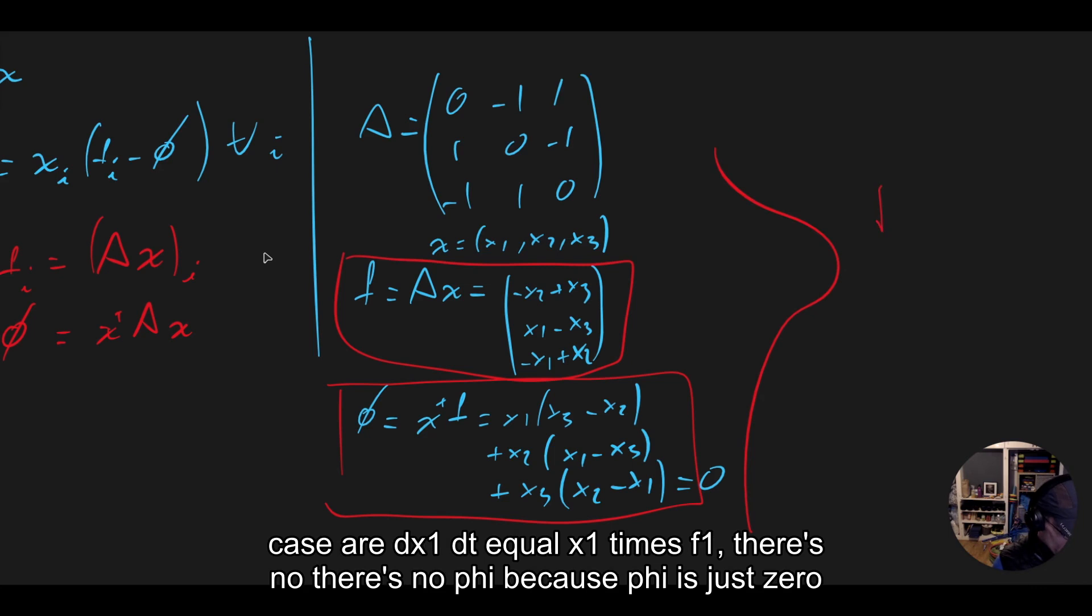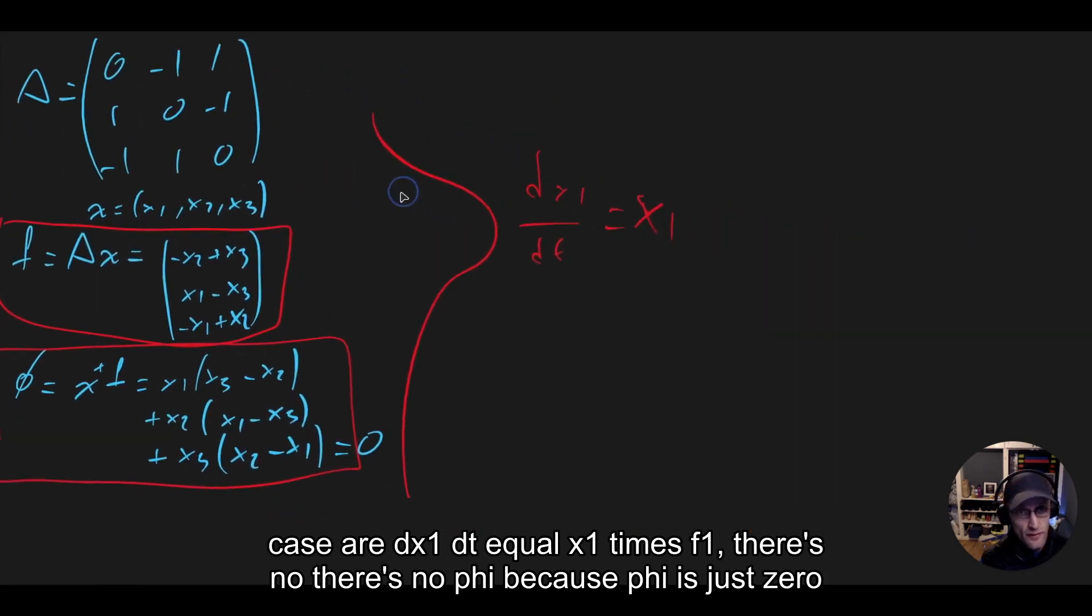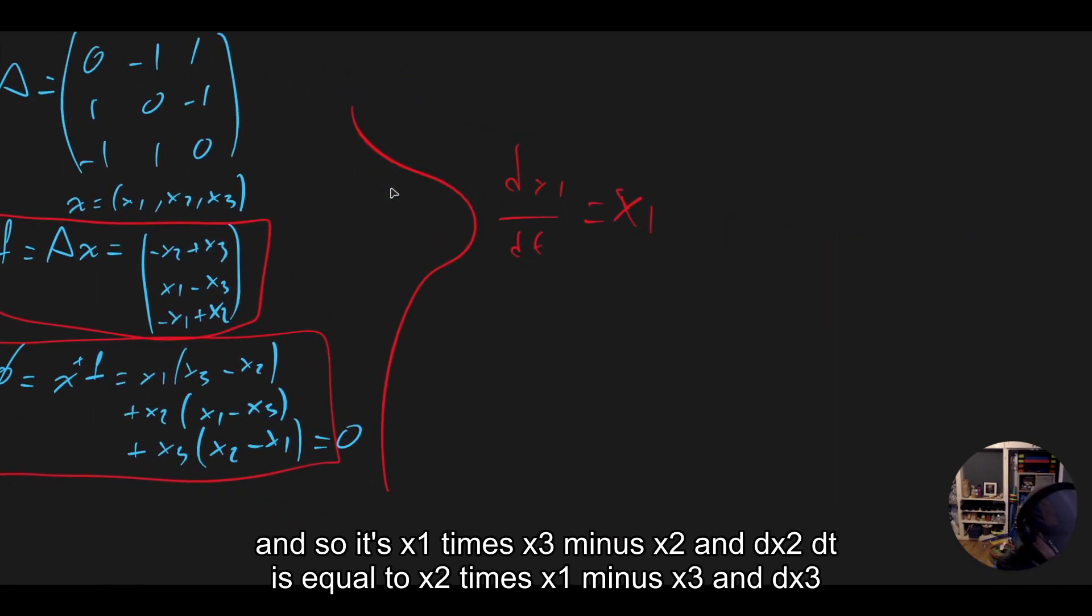Because we can then write down that the replicator dynamics equations for our particular case are: dx1/dt equal x1 times f1. There's no phi, because phi is just zero. And so it's x1 times (x3 - x2).